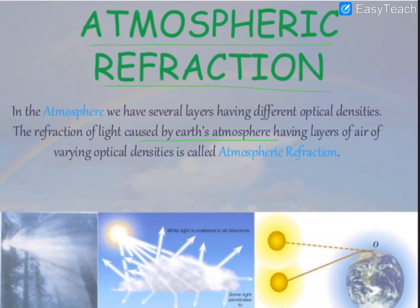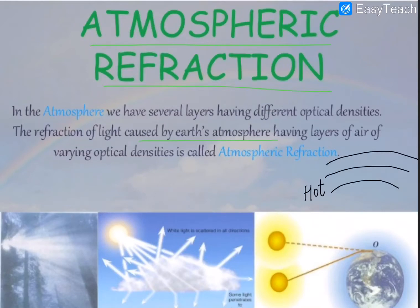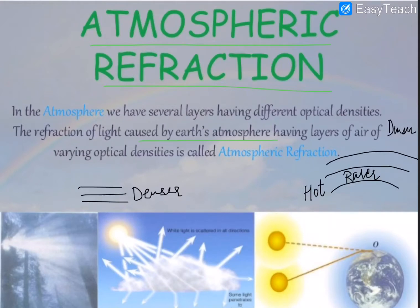Whenever light passes from one medium to another it undergoes refraction. If there is a lot of heat, the layers near the Earth's surface become very hot, and hot air becomes lighter — meaning the layers near the Earth are rarer. As we move upward it becomes denser. However, generally the layers near the surface of the Earth are denser, and as you move above they become rarer.